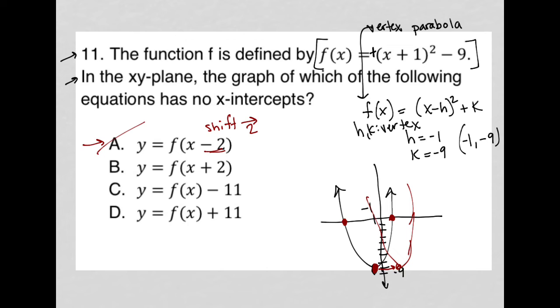Choice B says I shift to the left two units. Same deal. I'd be over here, but still the same parabola going upward, so it's still going to have x-intercepts.